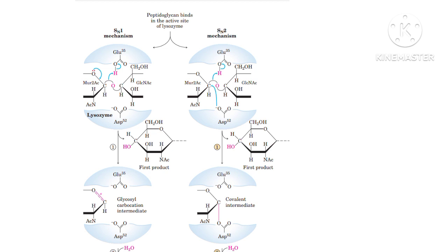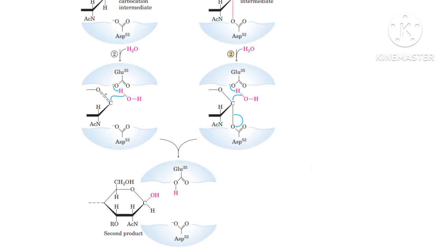In the SN2 mechanism, Aspartate 52 attacks carbon number one of NAM, and when it forms the bond with carbon number one, NAG is displaced. Then Glutamate 35 acts as a general acid and protonates the departing NAG. In the second step, water attacks and acts as a nucleophile at carbon number one of NAM, displacing Aspartate 52 as a general product. In the third phase, when water (the incoming nucleophile) attacks the electrophile (carbon number one of NAM), Aspartate 52 is still attached with the carbon — so this mechanism is SN2.